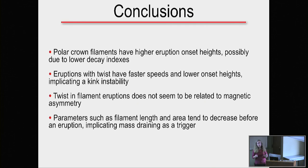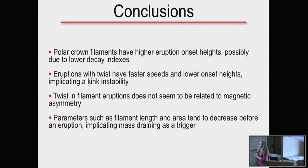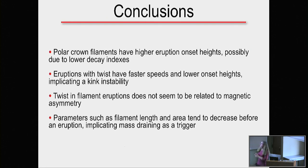In conclusions: polar crown filaments have higher eruption onset heights, possibly due to a lower decay index. Eruptions with twist have faster speeds and lower onset heights — possibly a kink instability. Twist in filament eruptions does not seem related to magnetic asymmetry. Parameters such as filament length and area tend to decrease before an eruption, which might have something to do with mass draining as a trigger.